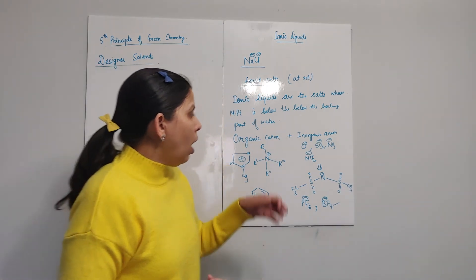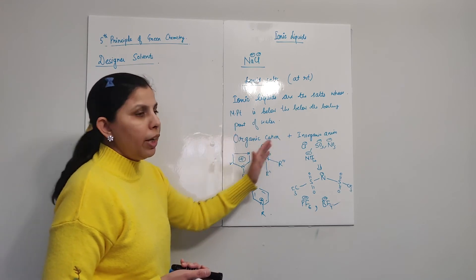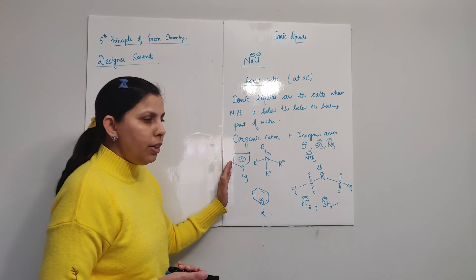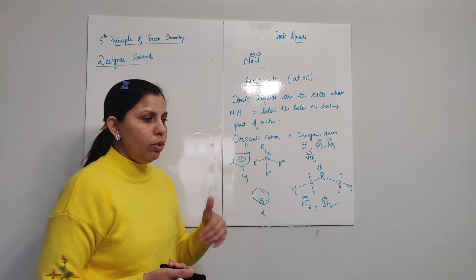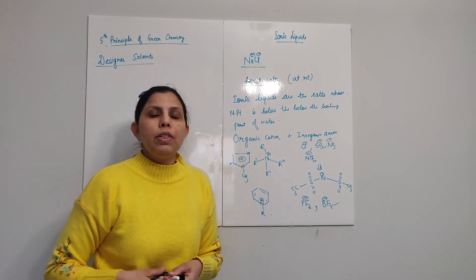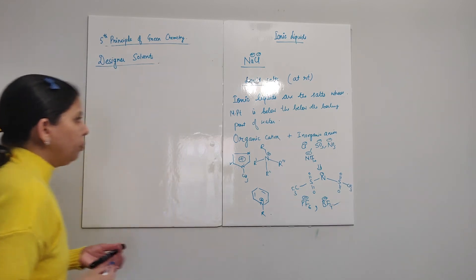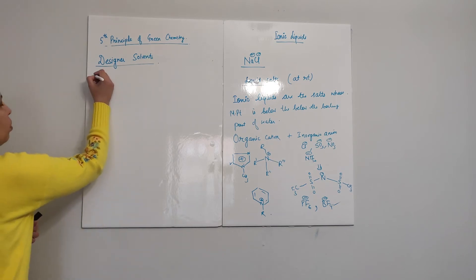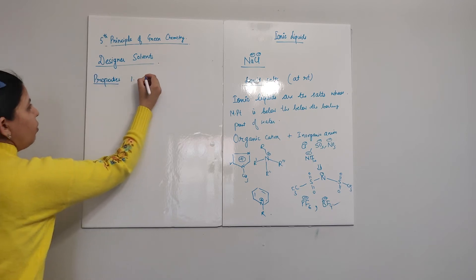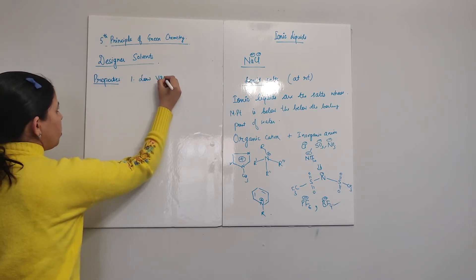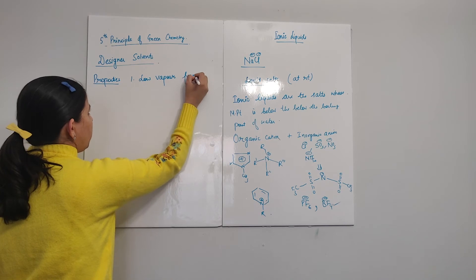So to summarize: ionic liquids are combinations of organic cations and inorganic anions. They are called designer or tailor-made solvents because we can choose the cation and anion of our choice to make an ionic liquid suited to our purpose. They have a low vapor pressure, which means they are not volatile and do not pollute the environment.